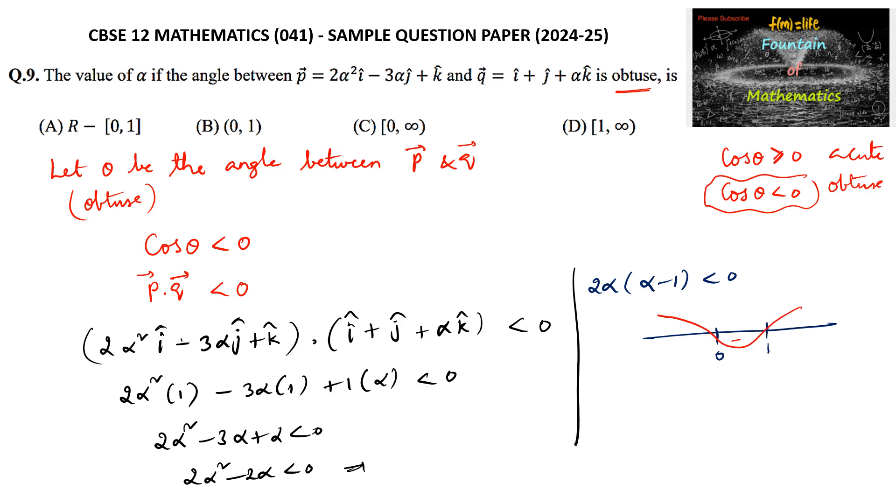So negative for 0 to 1, so alpha must belong to (0, 1). So we can go with option B. Thank you.